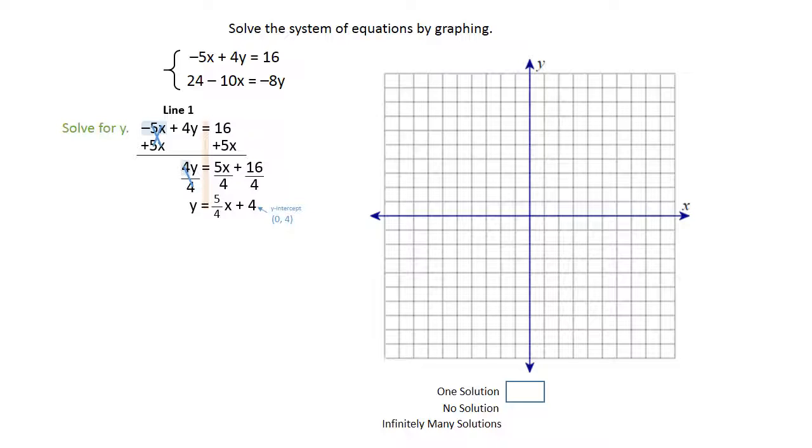That gives us our y-intercept that we can plot on the graph at 0, 4, and the slope gives us a map for that second point. A slope of 5 over 4 tells us to go up 5 and right 4 to place a second point, and you can go ahead and draw a line through those points and label your line y equals 5 fourths x plus 4. We're using our y equals mx plus b label, so that you can see how the slopes end up on this particular example.